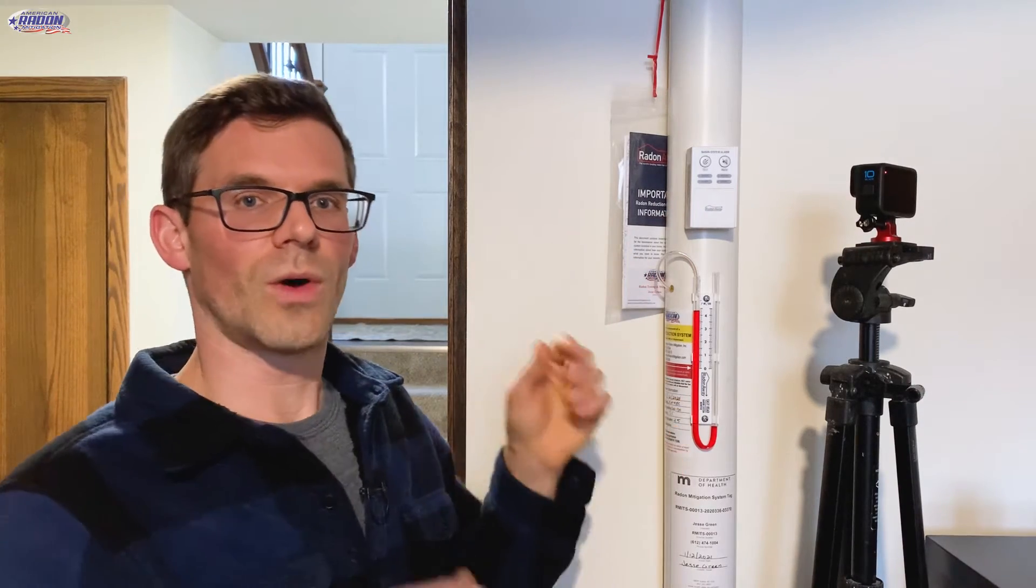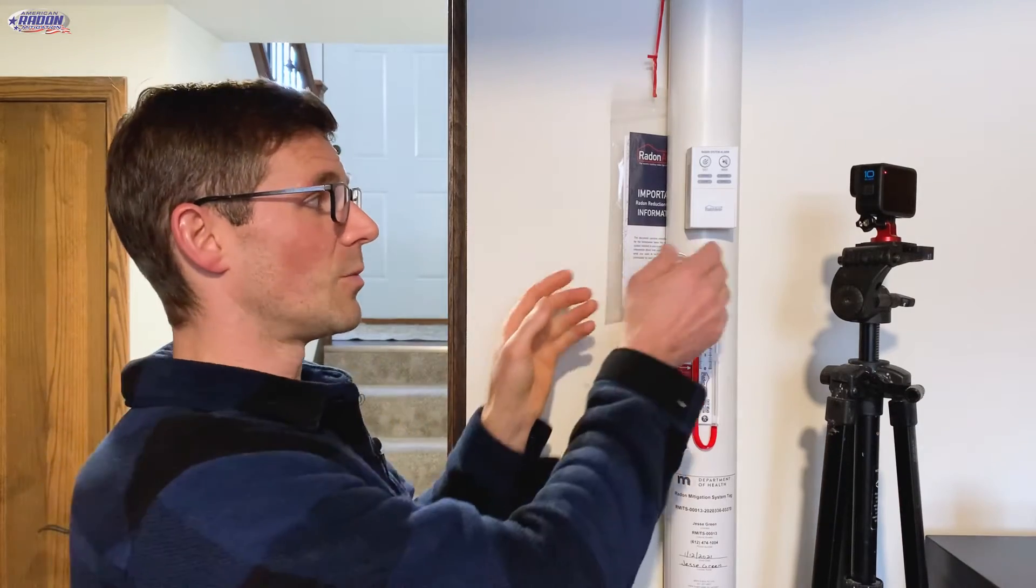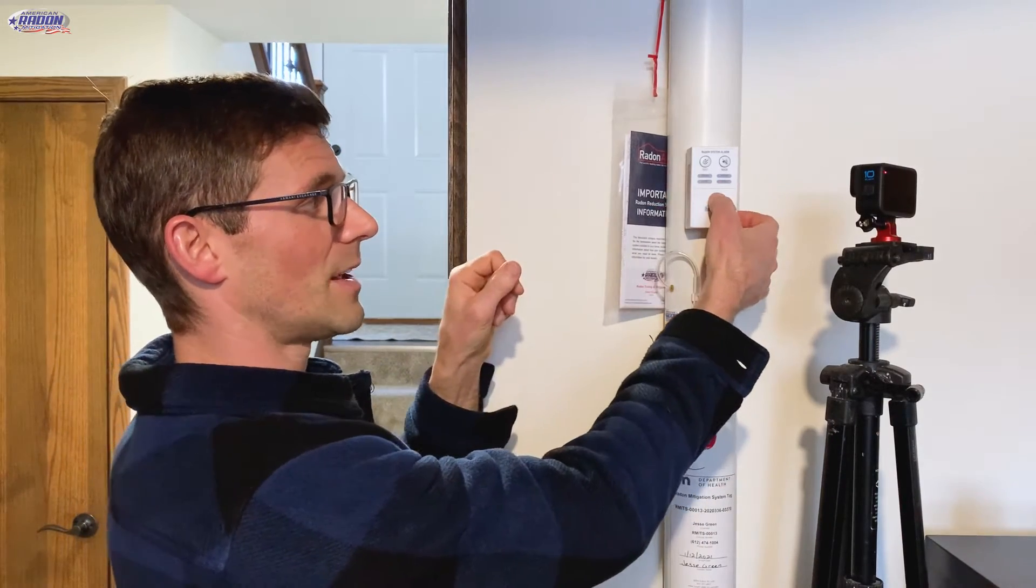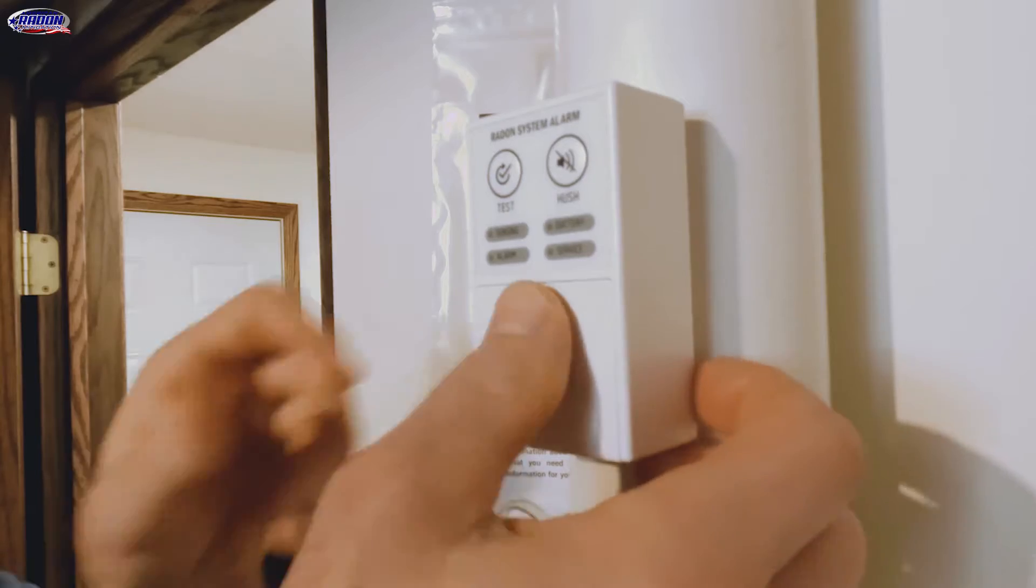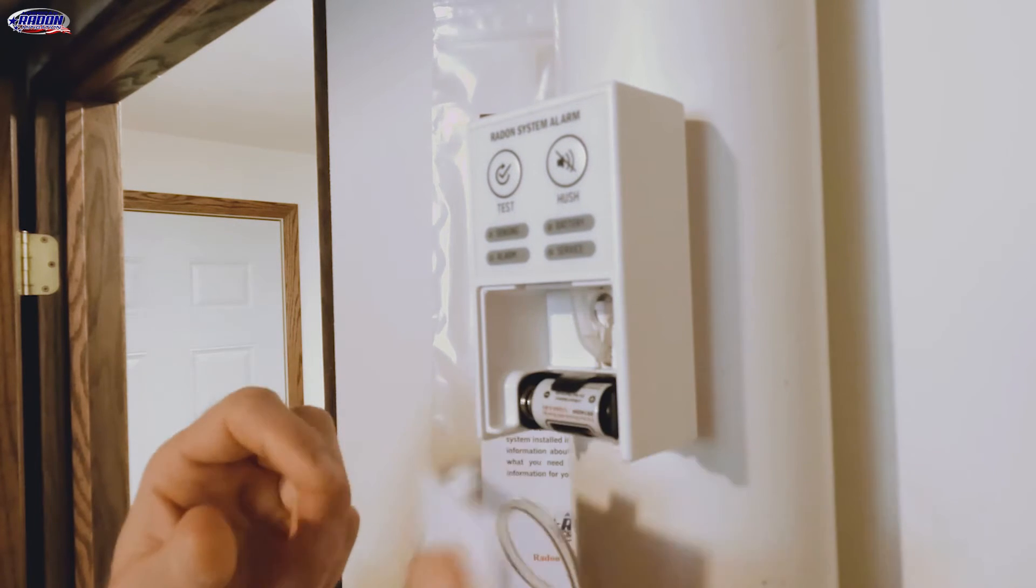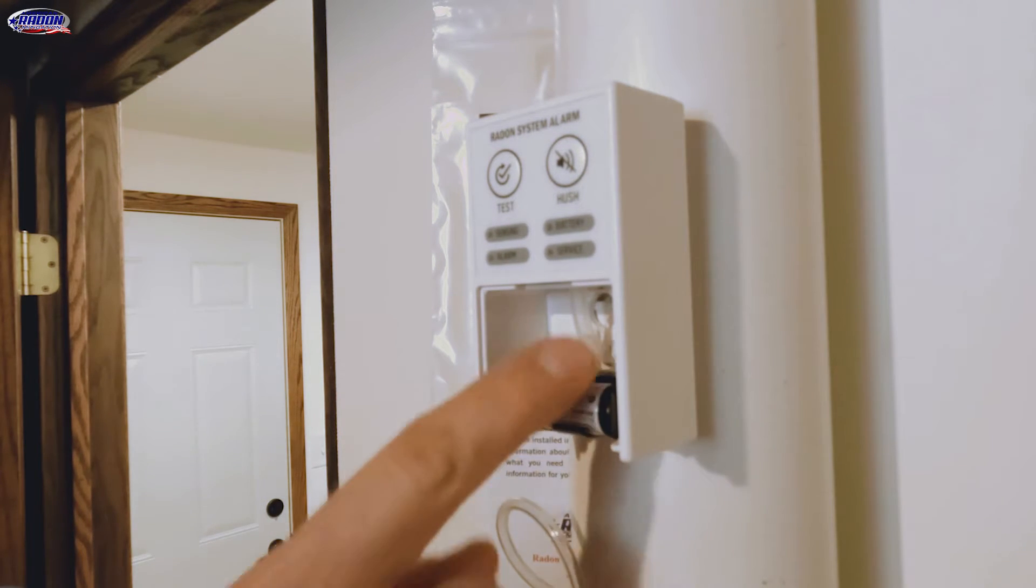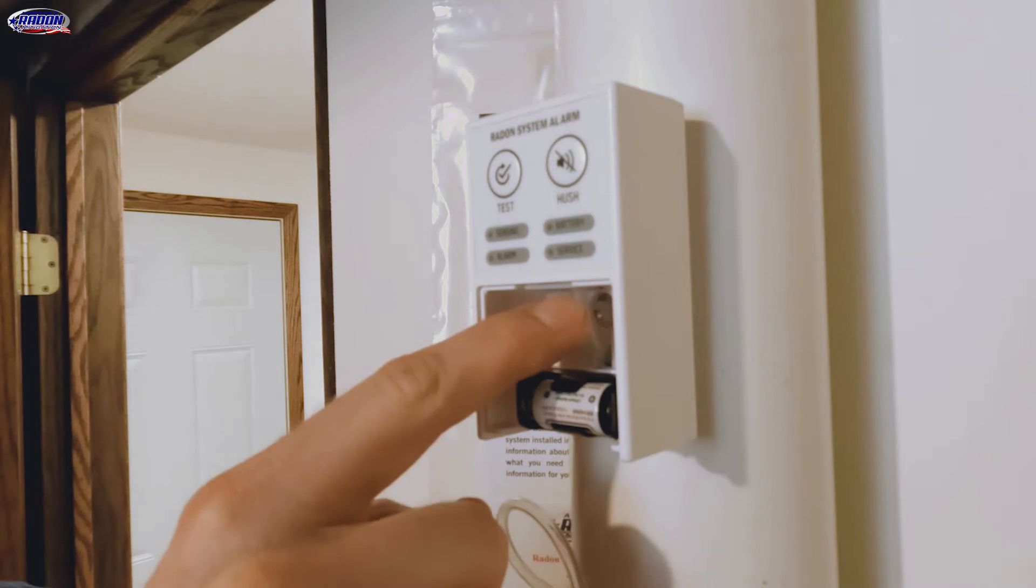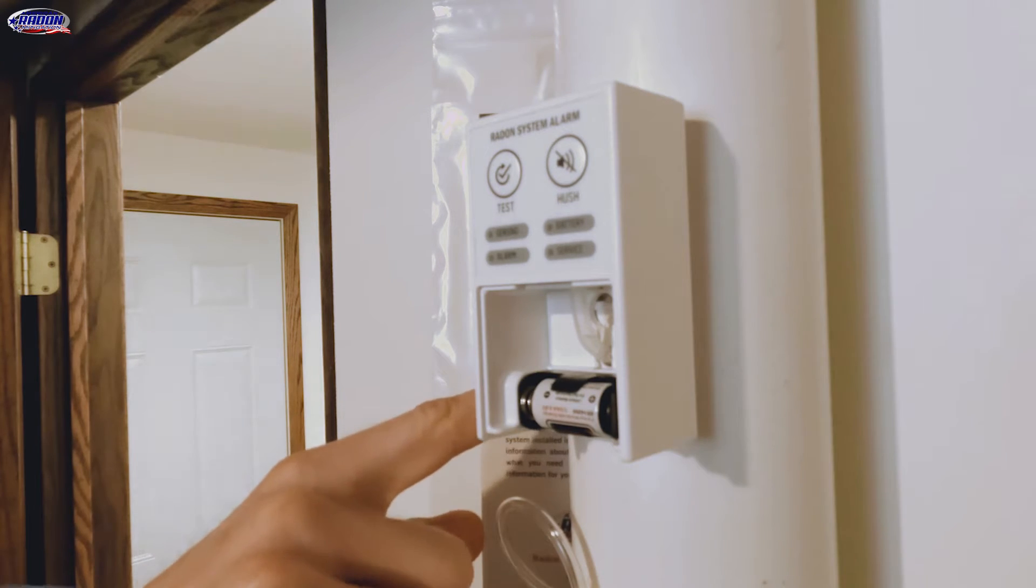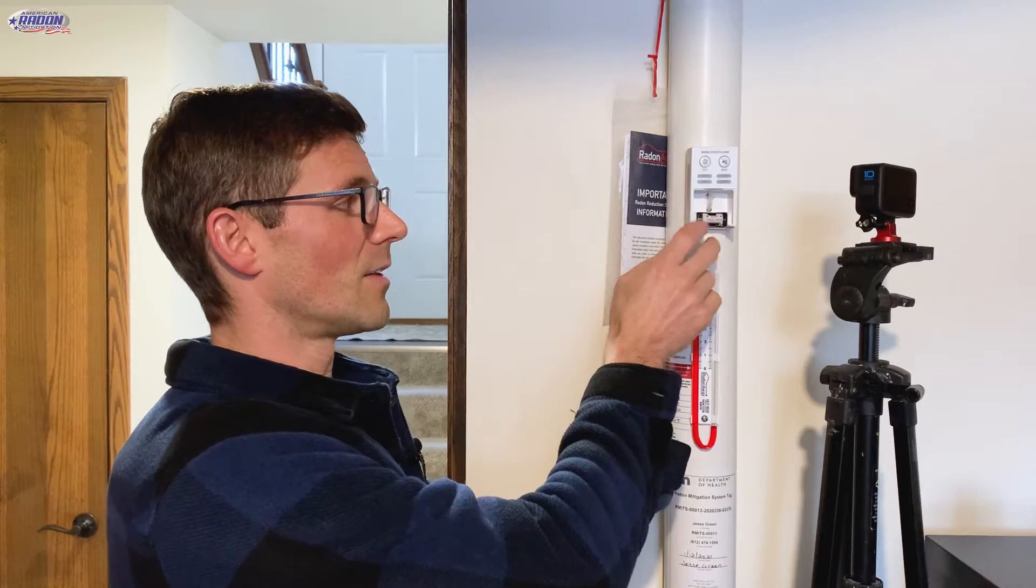So I want to show you what happens when the system loses pressure. I'm going to take the battery cover off, so I'm going to push in on this and then slide down, removing that cover, and then we've got the battery here and then the tubing, which goes into the Radon System. So this is a pressure-activated alarm.